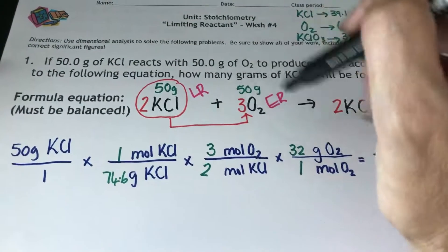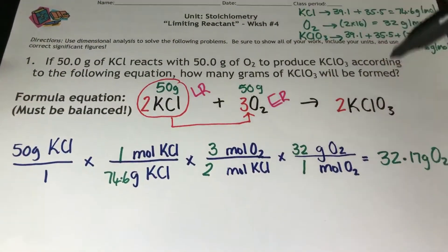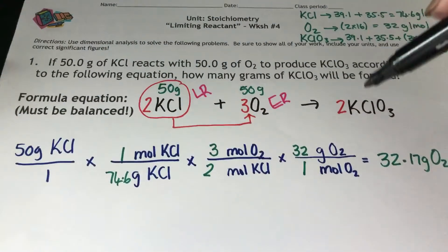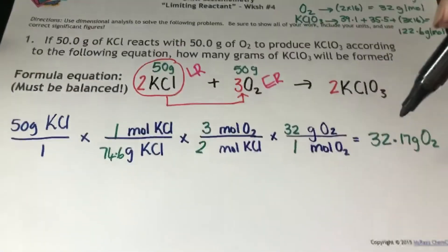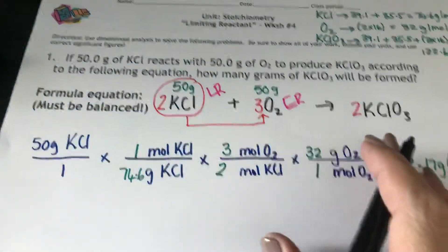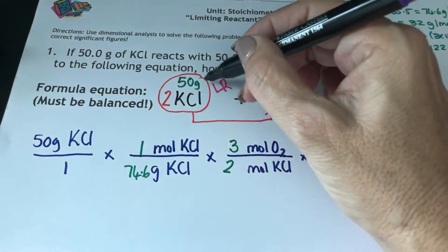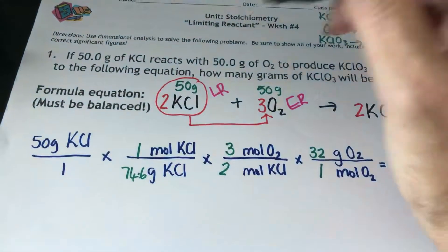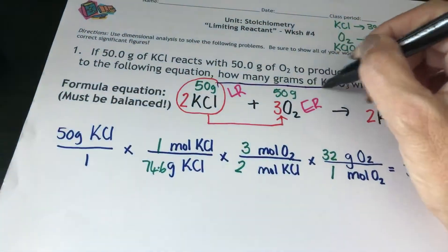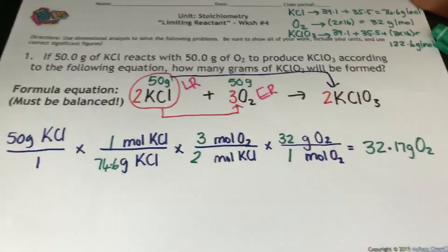I cannot use oxygen to find out how much product I'm going to produce because it's not going to give me the correct answer — I cannot use up all 50 grams, I'm only going to use up 32 grams. So that means I will take my limiting reactant and ask: if I have 50 grams of this, how much of the product am I going to get?